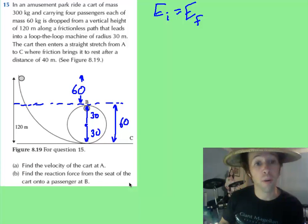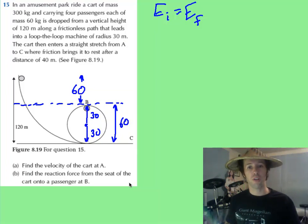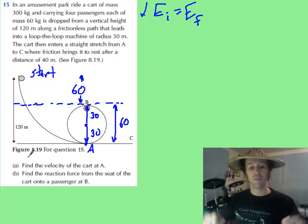This first part, or part A, actually has nothing to do with circular motion, and is all about conservation of energy, right here, with the start being at the top, and it's going to be all the way 120 meters down at the bottom at point A. So see what you can do about solving that conservation of energy problem.